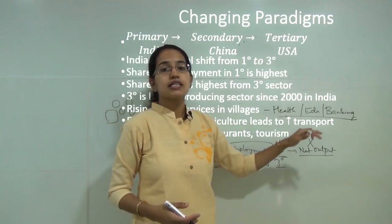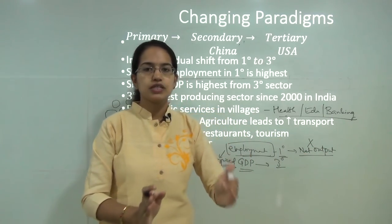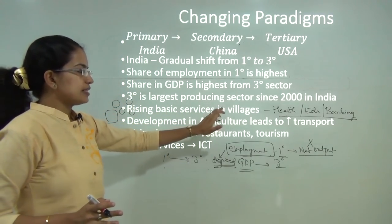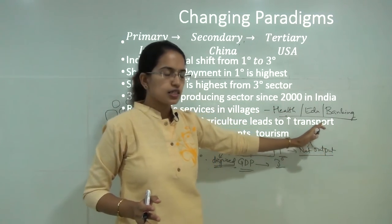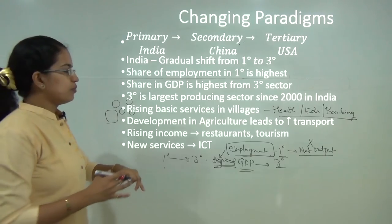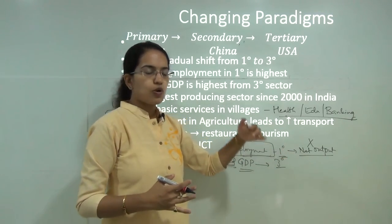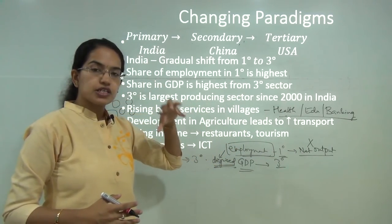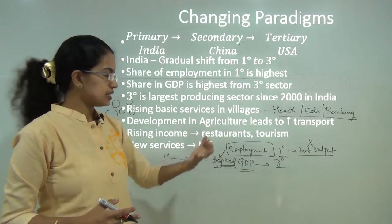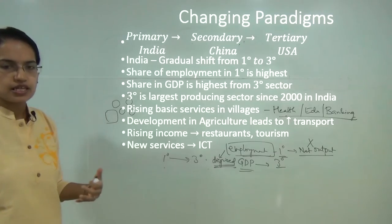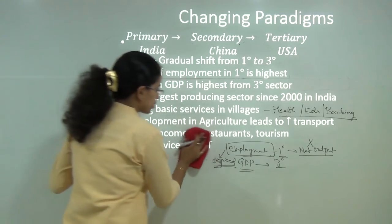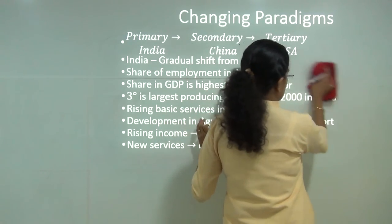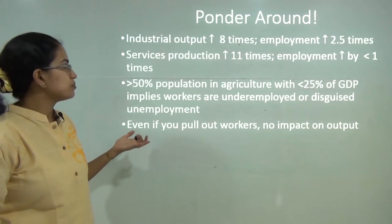With the development of agriculture, there is a need to increase transport because whatever is produced must be transported and stored — so agricultural development can again lead to development of the tertiary sector. With increasing income, more people are moving towards tourism and restaurants, which are all tertiary sector activities. Whatever new services are coming up, specifically in hubs like Bangalore with information technology centers, are again tertiary sector activities that are booming up.